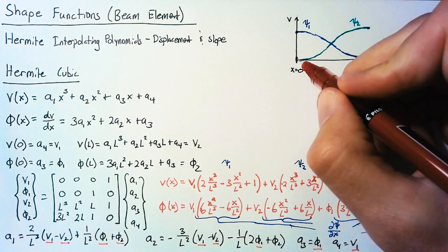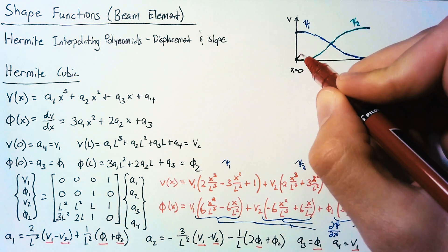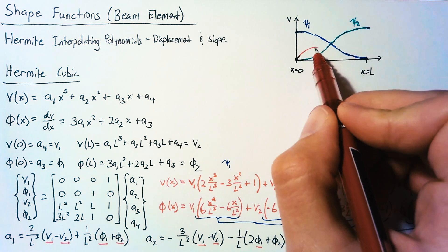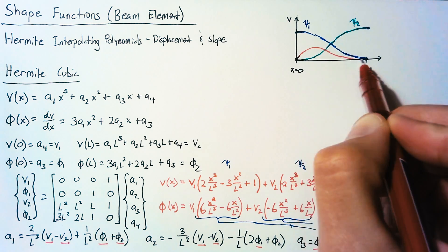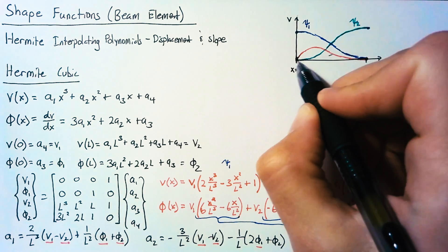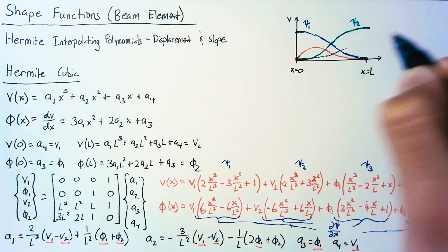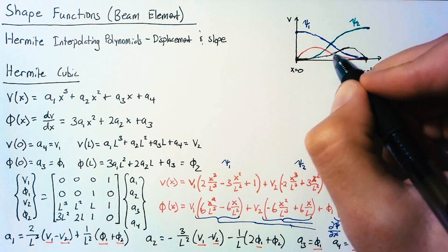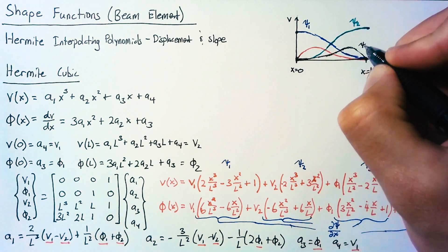But the slopes for psi3 are going to be positive at x equals 0 and 0 at x equals l. What this actually looks like, we have a positive slope here, which reaches a peak, comes back down, and is at 0 at x equals l. And then of course, we just have symmetry for the other side. And so our four shape functions look something like this.